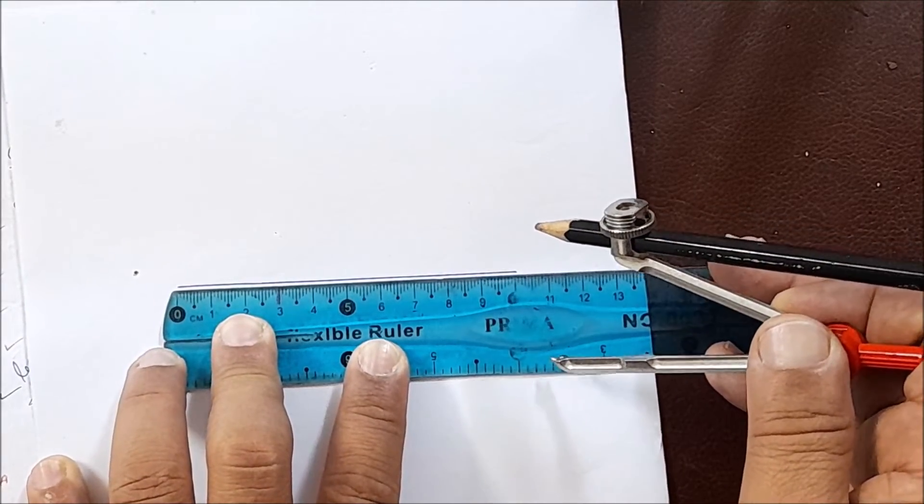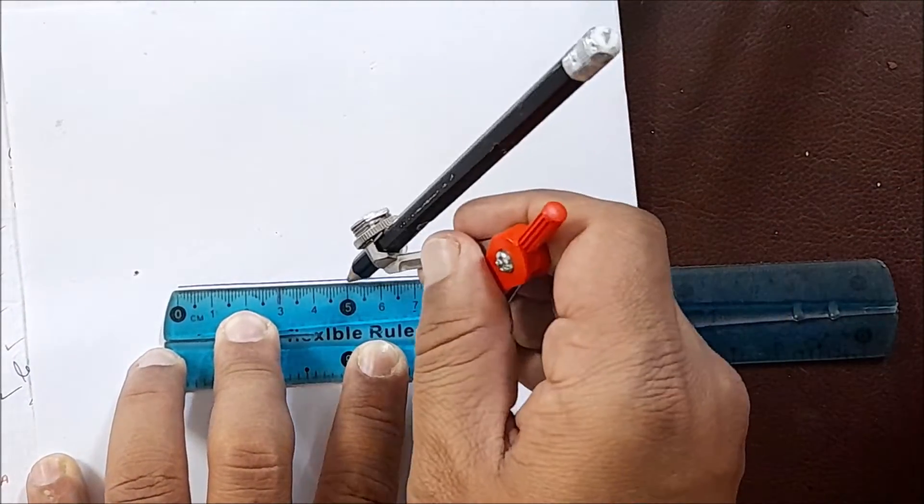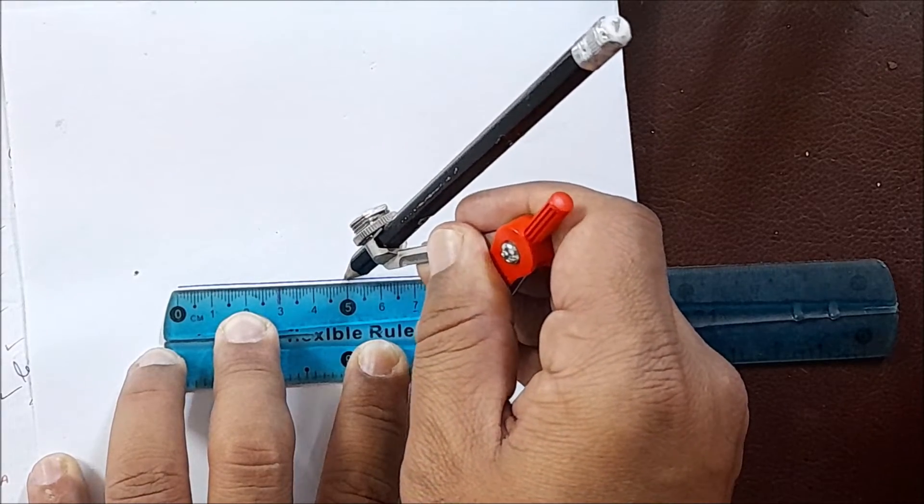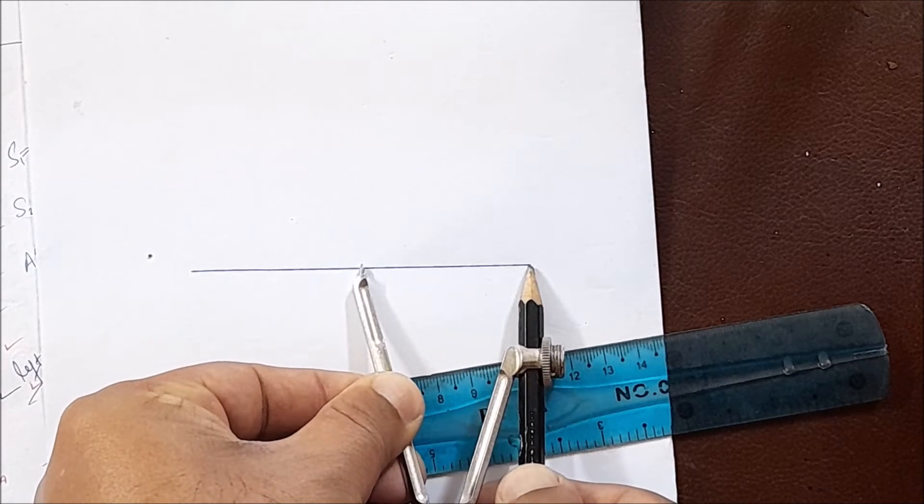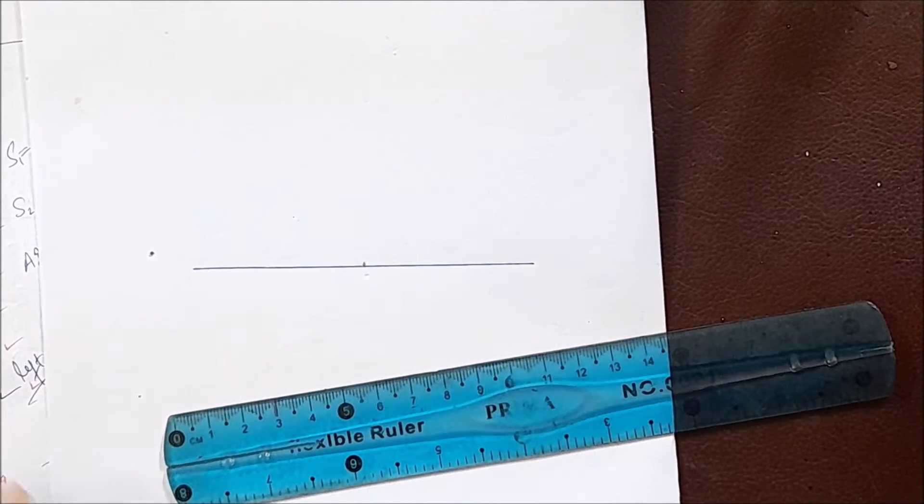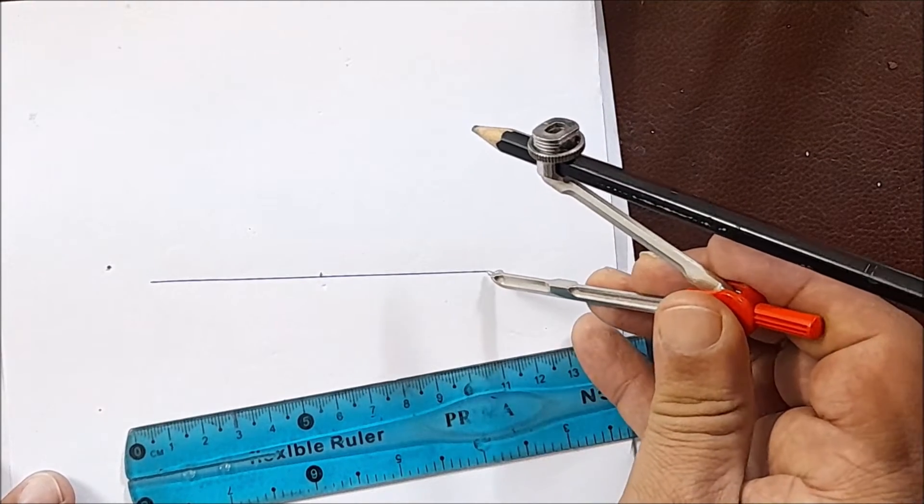Just mark the fifth centimeter here. Now we'll open this and we will scribe an arc from this side.